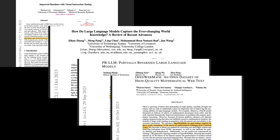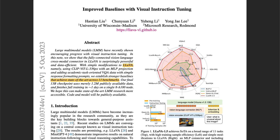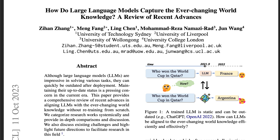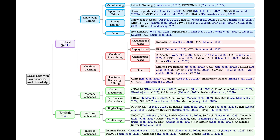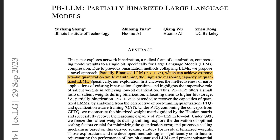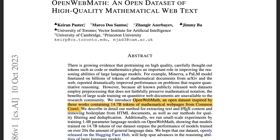There are many other papers this week. LLaVA, the open-source large multimodal model, made some modifications and achieved state-of-the-art across 11 benchmarks — it probably deserves a separate video. There's also a review paper on how large language models capture ever-changing world knowledge, covering methods including knowledge editing, continual learning, memory-enhanced, retrieval-enhanced, and internet-enhanced methods. Another paper introduced partially binarized LLMs, achieving extreme low-bit quantization while maintaining performance. Finally, the OpenWebMath paper introduced a massive open dataset containing every math document found on the internet with LaTeX equations.